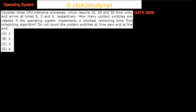Let's look at this problem from operating systems. Consider three CPU-intensive processes which require 10, 20, and 30 time units, and they arrive at times 0, 2, and 6 respectively. How many context switches are needed if the operating system implements a Shortest Remaining Time First scheduling algorithm? Do not count the context switch at time 0 and at the end.